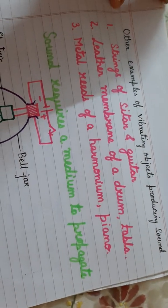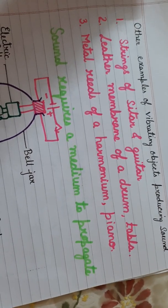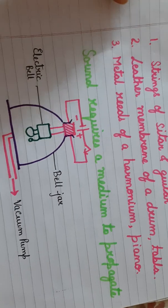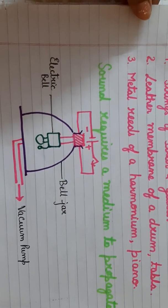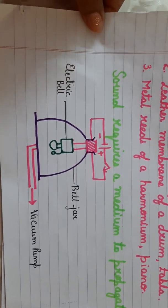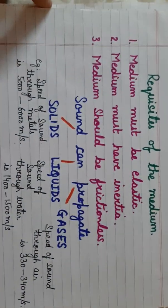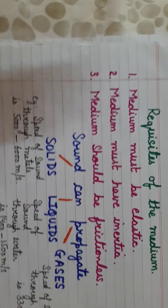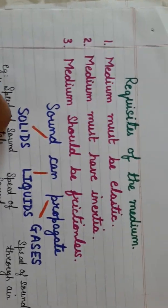That is why the astronauts who go to space cannot speak to each other. They have got special devices with the help of which they are able to communicate, because there is no atmosphere or air — there is vacuum in space.